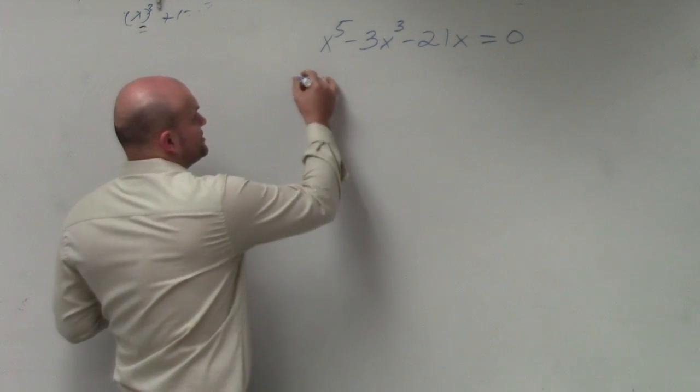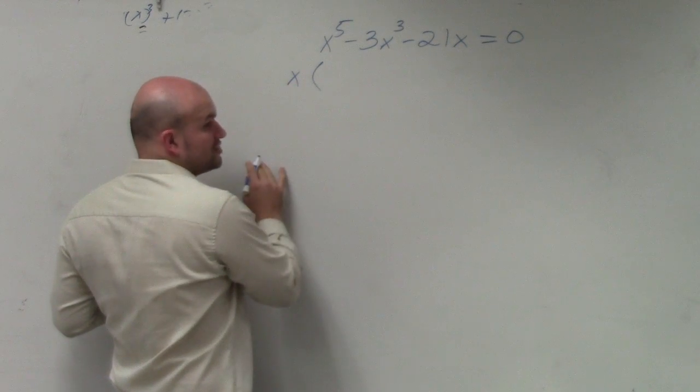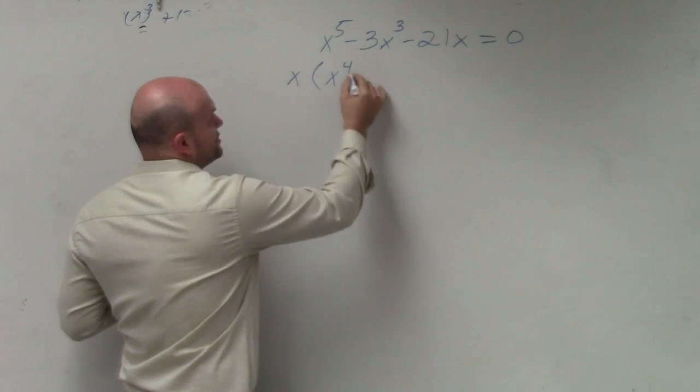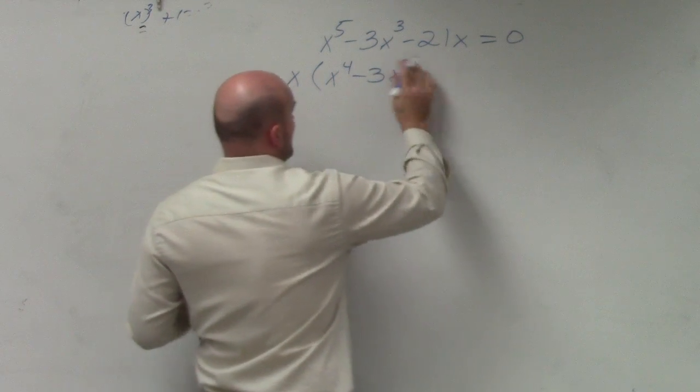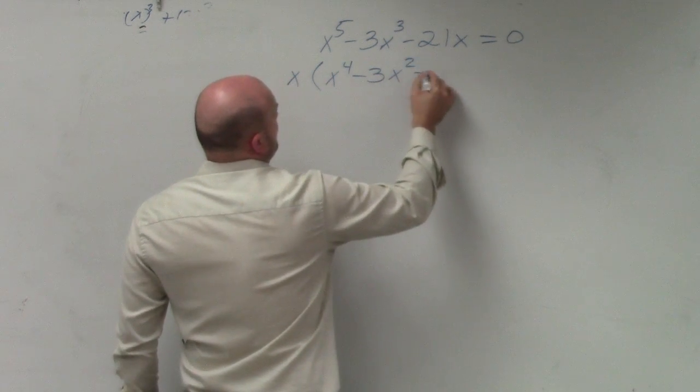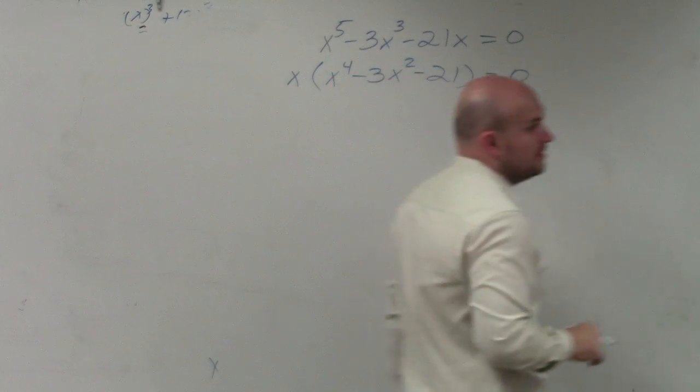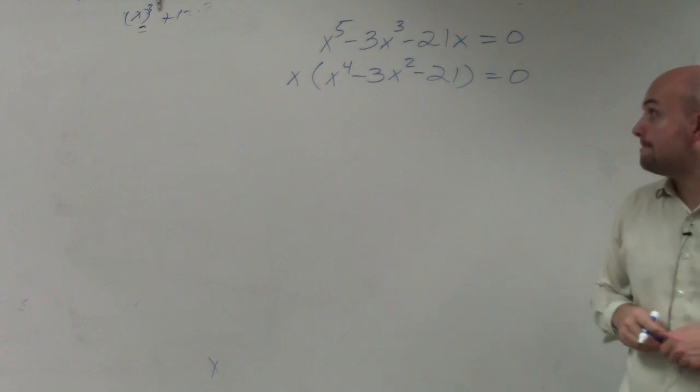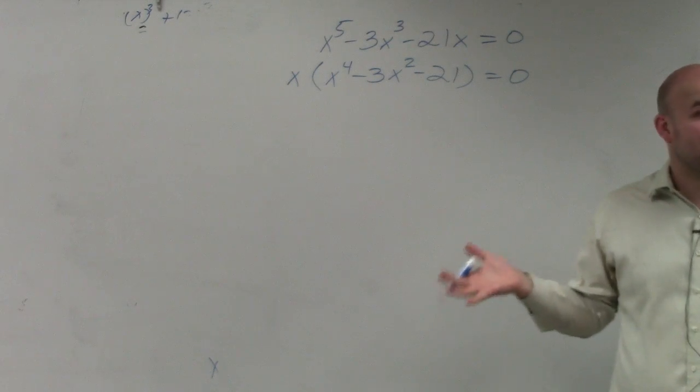First thing you always want to do is factor out a GCF. I notice that they all share an x, so I factor out x. Does everybody see that? Now I want to see, can I further factor this down? Because I still need to solve this.